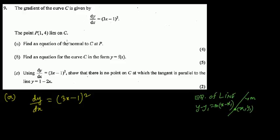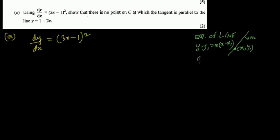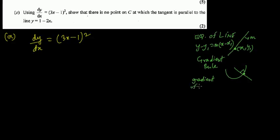We need the gradient. The gradient rule is: if you have a curve and at a particular point you have a normal drawn to the curve, the gradient of the normal to the curve is the negative reciprocal of dy/dx, which is the gradient of the curve itself.